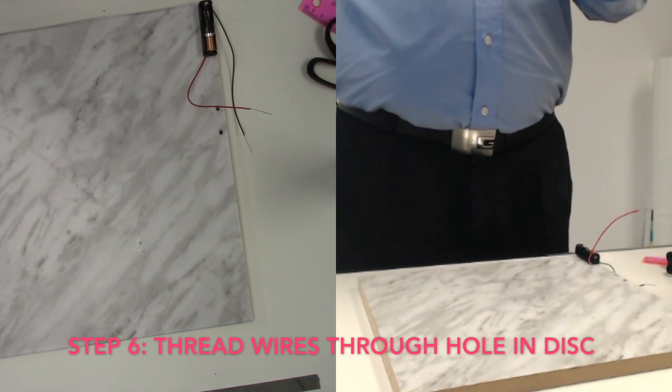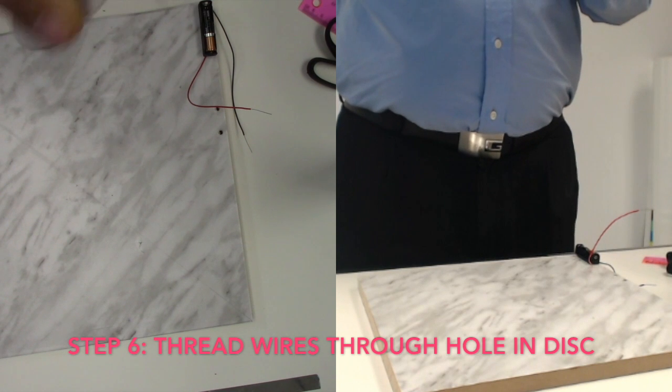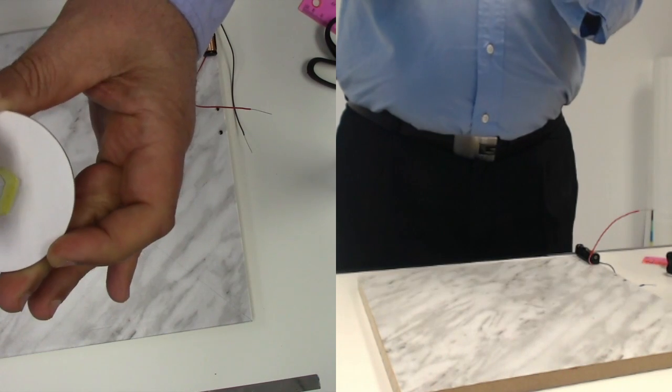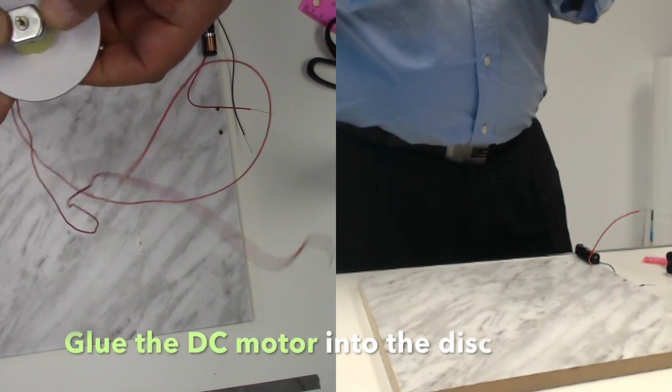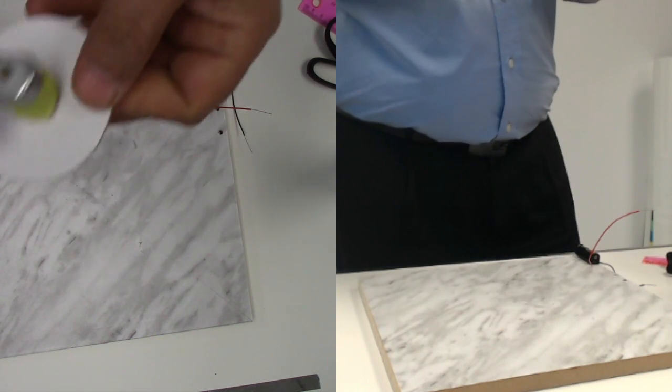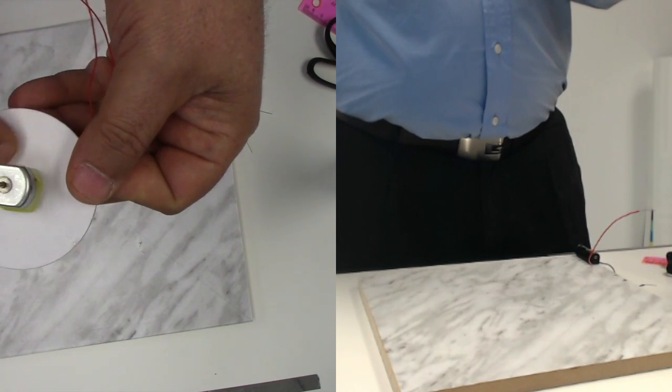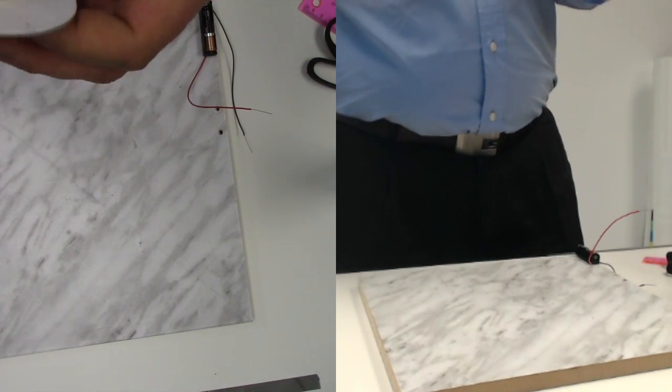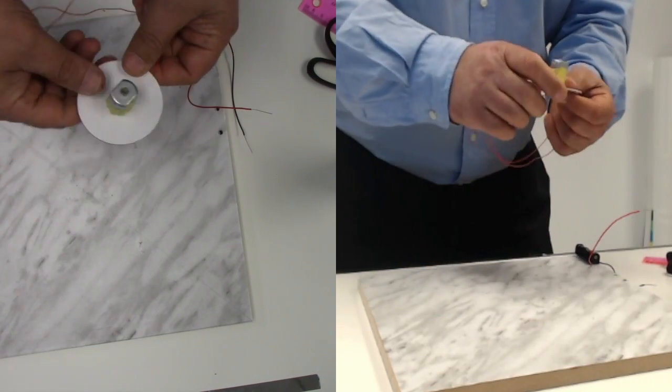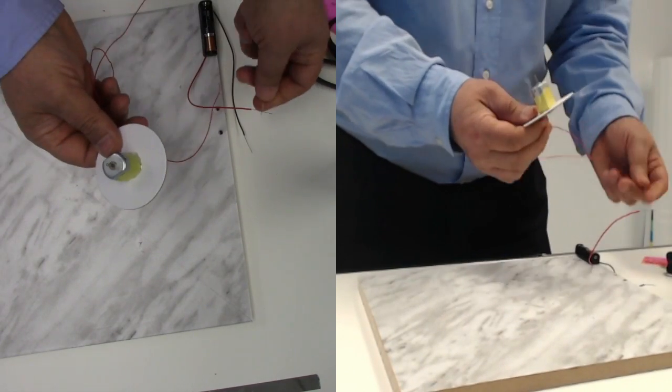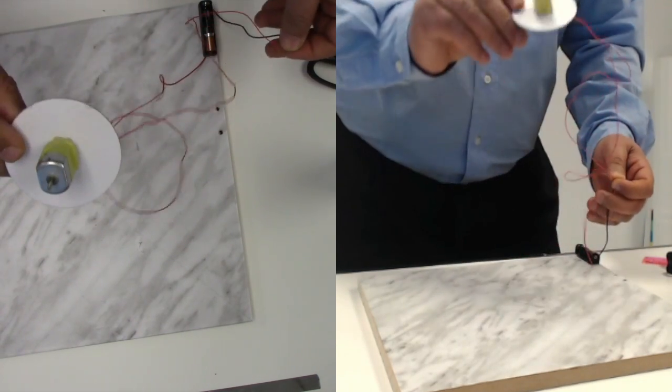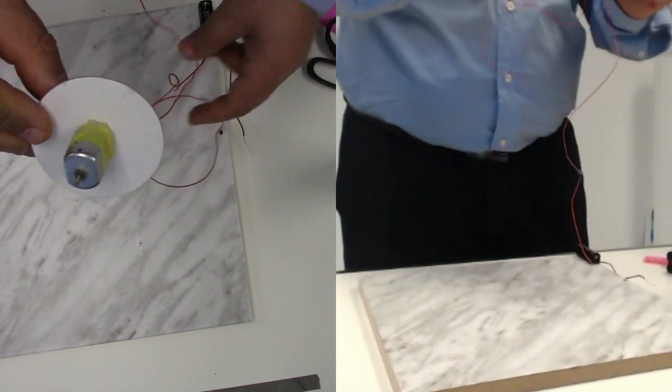These two wires are going to go through this hole. Then I am going to glue gun the motor into this disk. I'm just going to put a little bit of glue around the edges of the motor too. Now let's try it one more time just to make sure that because of the gluing, the connection is still there. The motor is working.